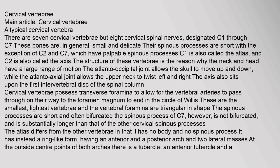There are 7 cervical vertebrae but 8 cervical spinal nerves, designated C1 through C7. These bones are, in general, small and delicate. Their spinous processes are short, with the exception of C2 and C7, which have palpable spinous processes. C1 is also called the atlas, and C2 is also called the axis. The structure of these vertebrae is the reason why the neck and head have a large range of motion. The atlanto-occipital joint allows the skull to move up and down, while the atlanto-axial joint allows the upper neck to twist left and right. The axis also sits upon the first intervertebral disc of the spinal column. Cervical vertebrae possess transverse foramina to allow for the vertebral arteries to pass through on their way to the foramen magnum to end in the circle of Willis.